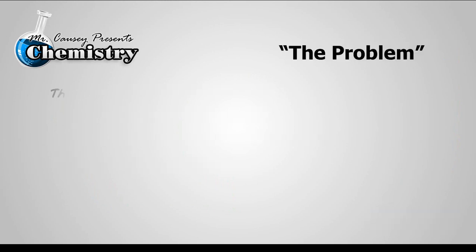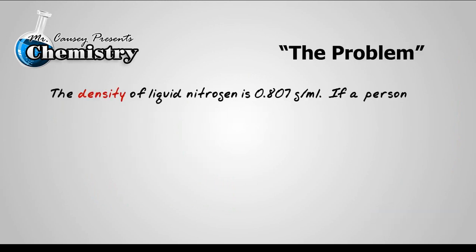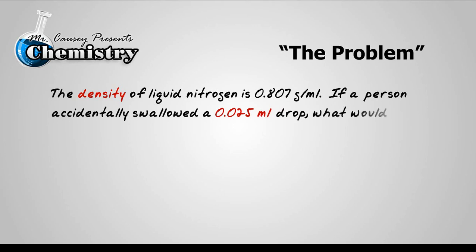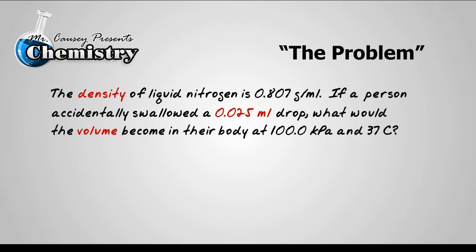So what's the problem? The density of liquid nitrogen is 0.807 grams per milliliter. If a person accidentally swallowed a 0.025 milliliter drop, what would the volume become in their body at 100 kilopascals and 37 degrees Celsius?